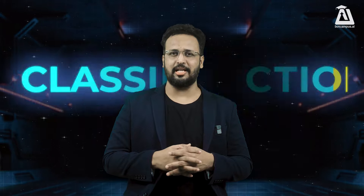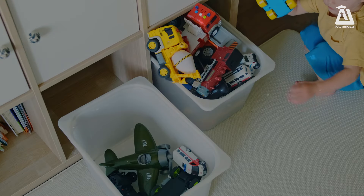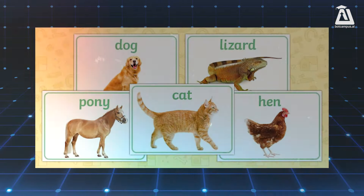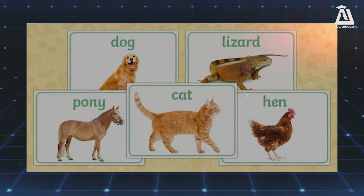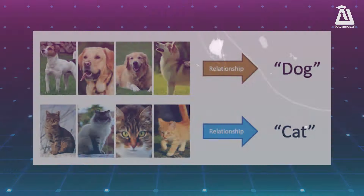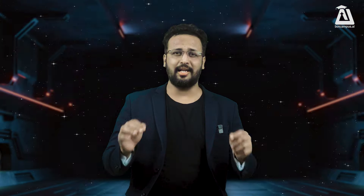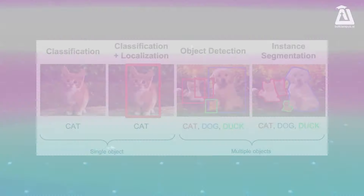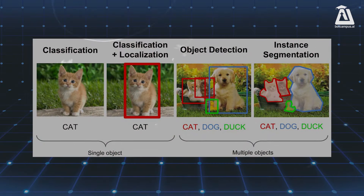Now let me talk about classification. This one's like sorting your toys into two different bins. Let's say we have pictures of pets and we want the computer to sort them into groups — cats, dogs, birds. Classification looks at each picture and decides which group it belongs to based on what it has learned. So if you show it a picture of a parrot, it knows to put it in the bird box. Then you show it a picture of a cat, it knows it should put it in the cat box.